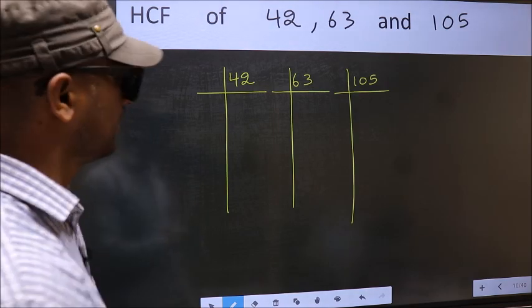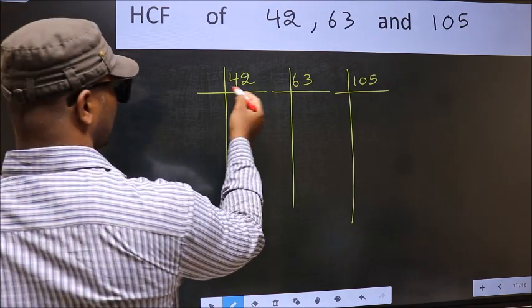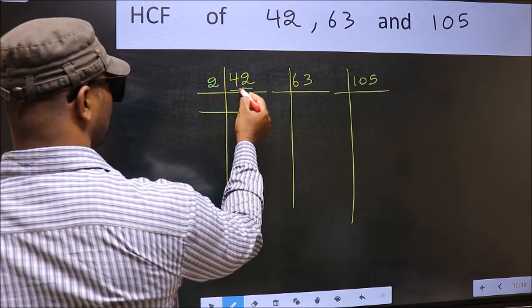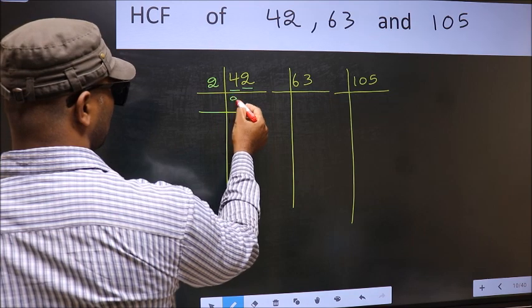Next, in this number, last digit 2, even, so take 2. First number 4. When do we get 4 in 2 table? 2, 2 is 4. The other number 2. When do we get 2 in 2 table? 2, 1 is 2.